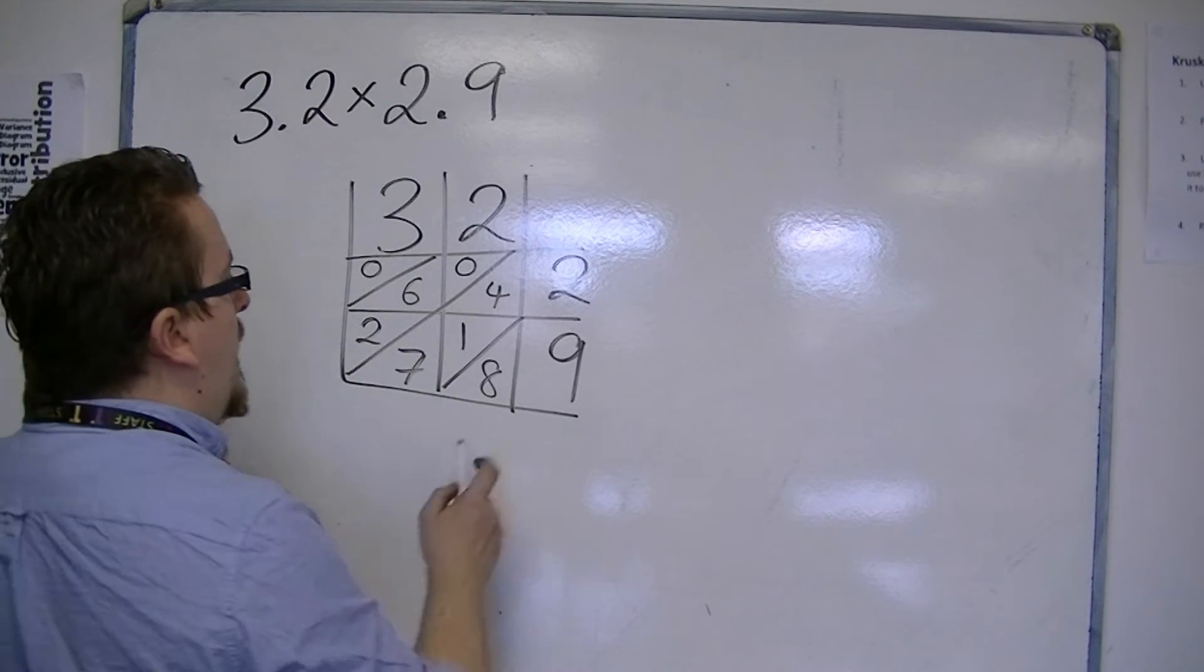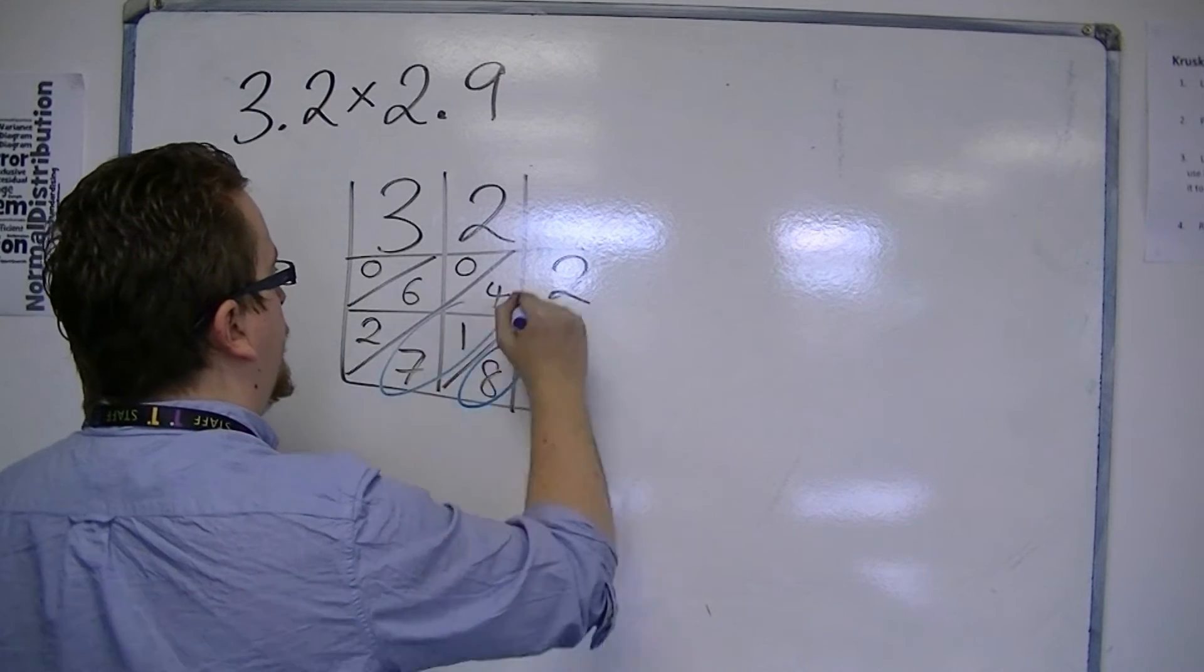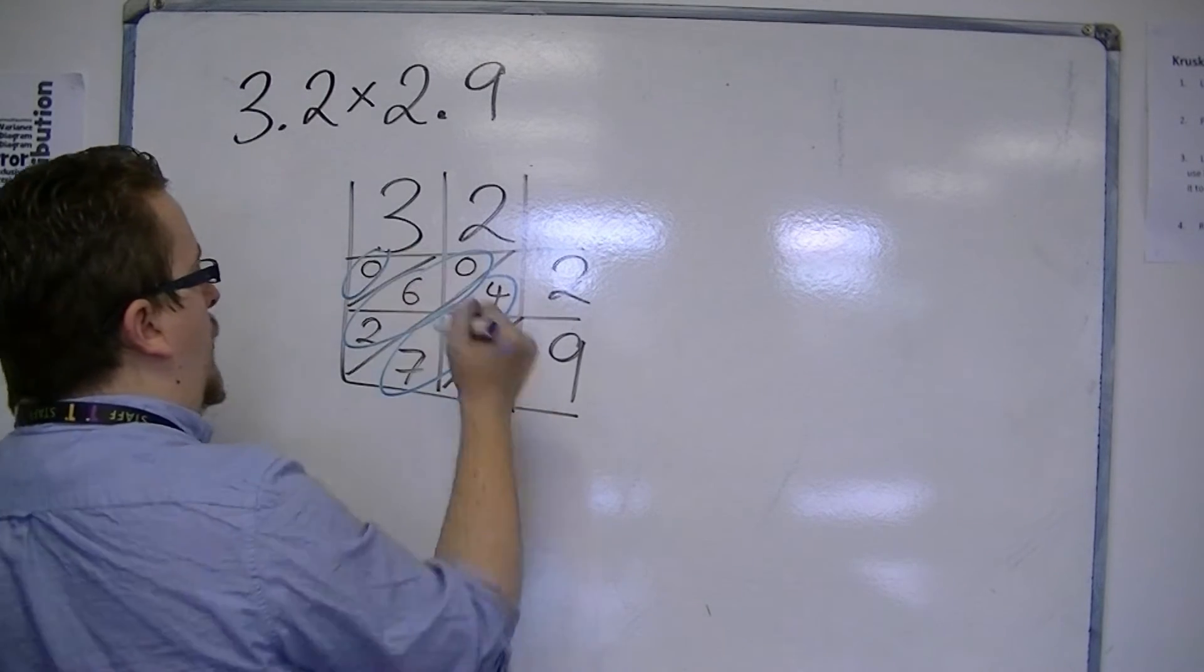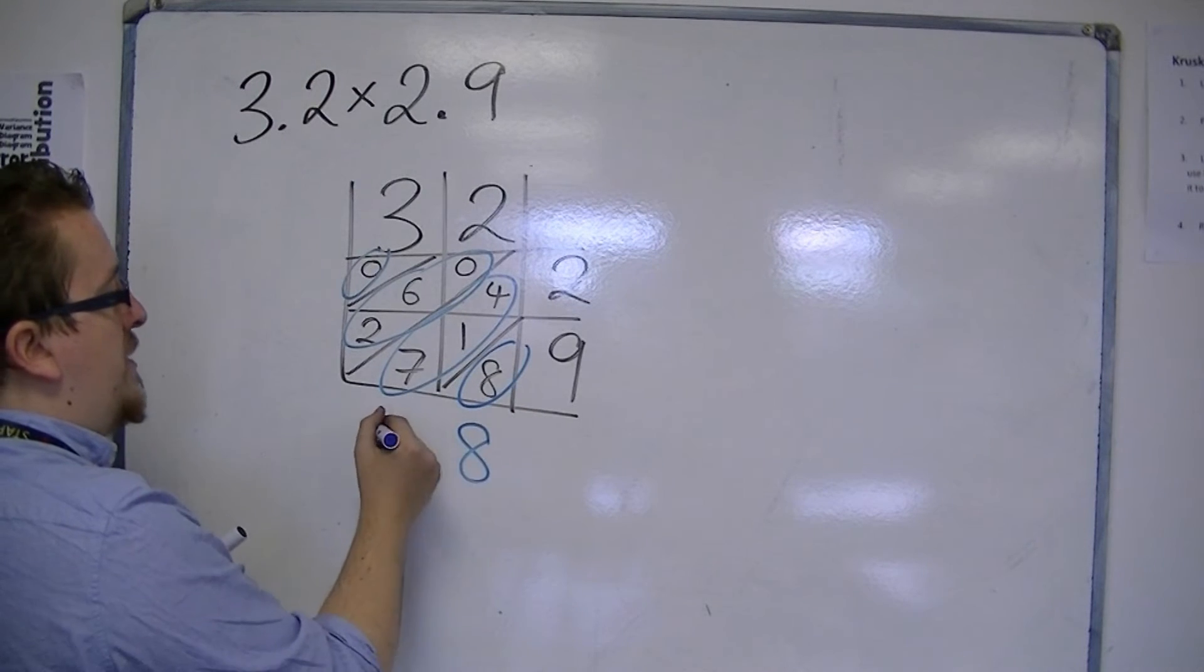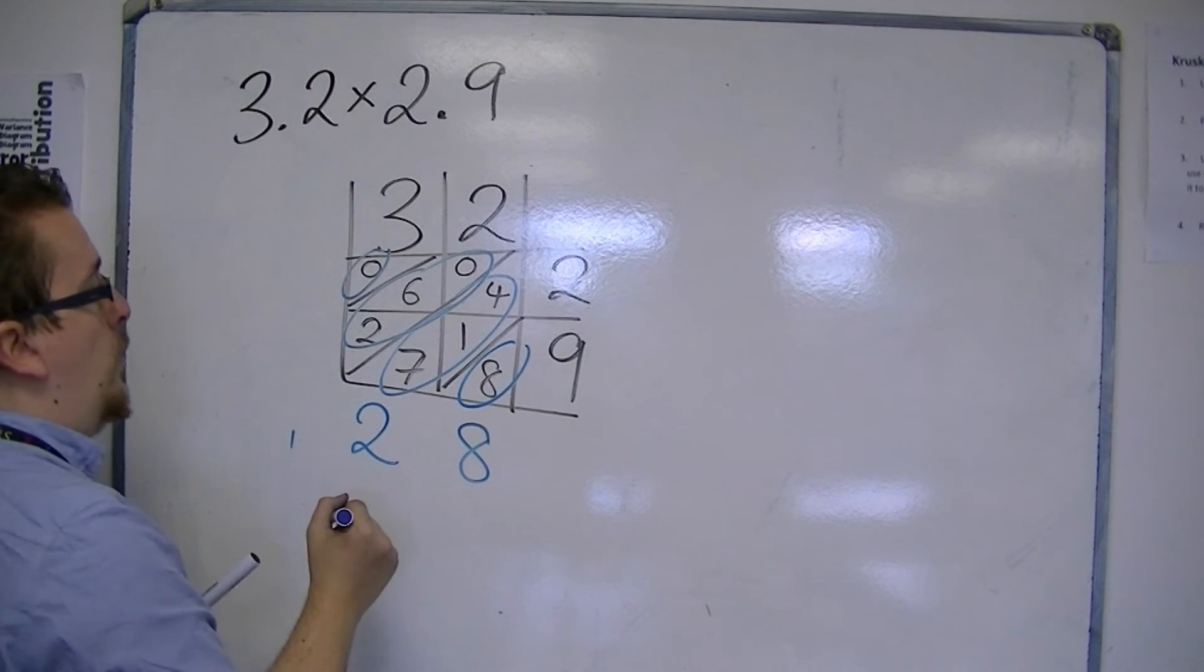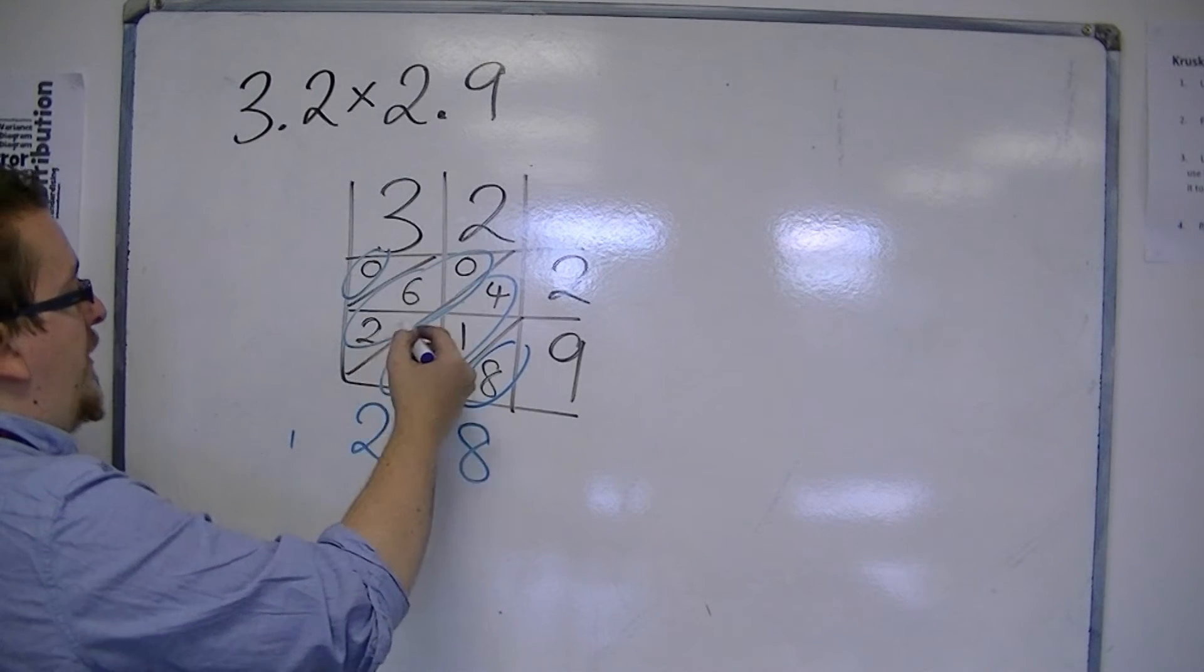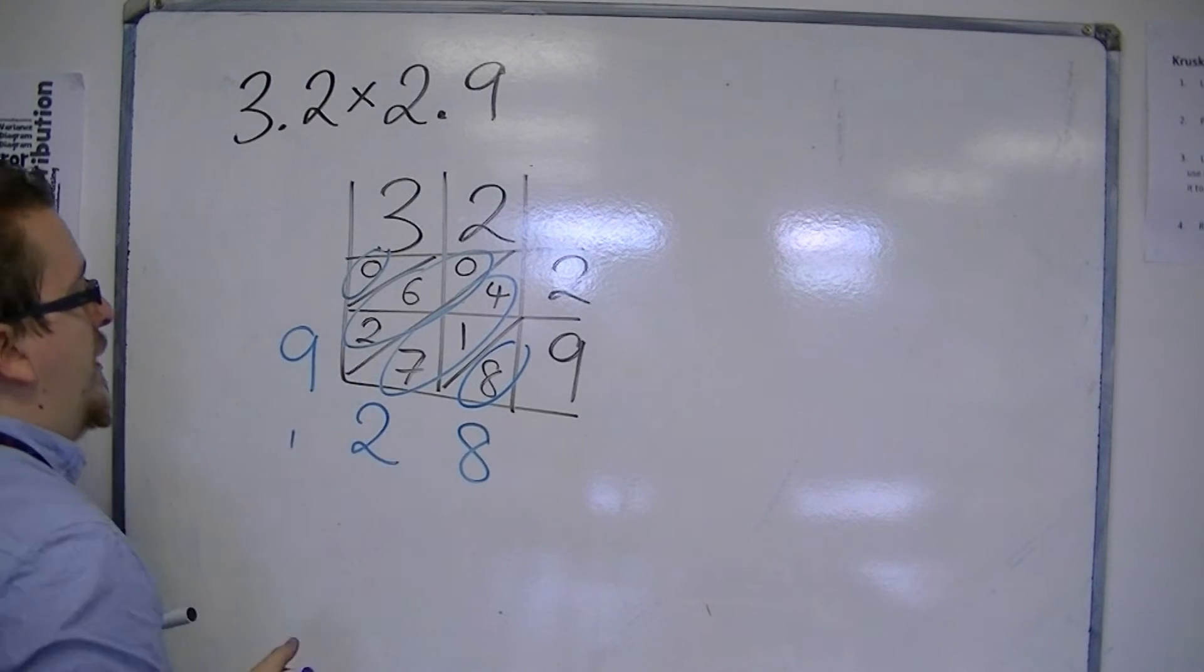Then remember we're looking at the diagonals. So we have 8. 4 plus 1 is 5, plus 7 is 12. Write the 2, carry the 1. 6 and 2 is 8, plus that 1 is 9. And that's just 0.